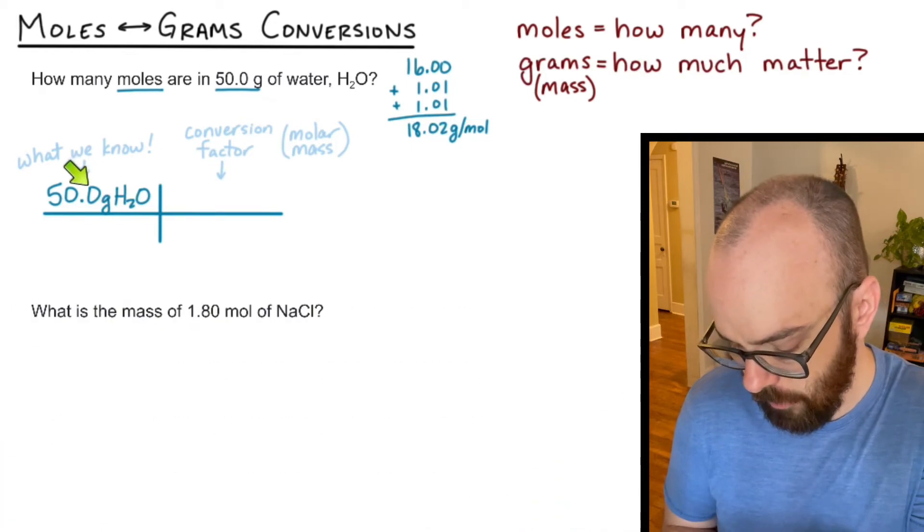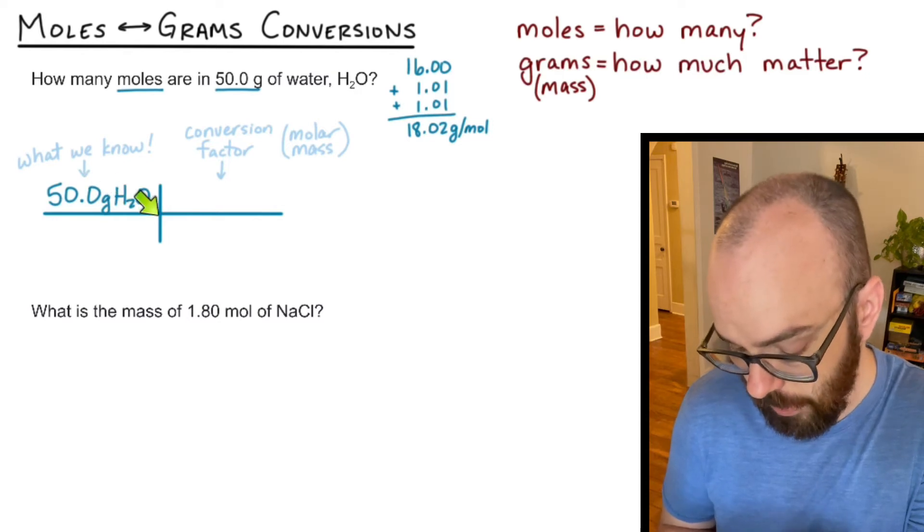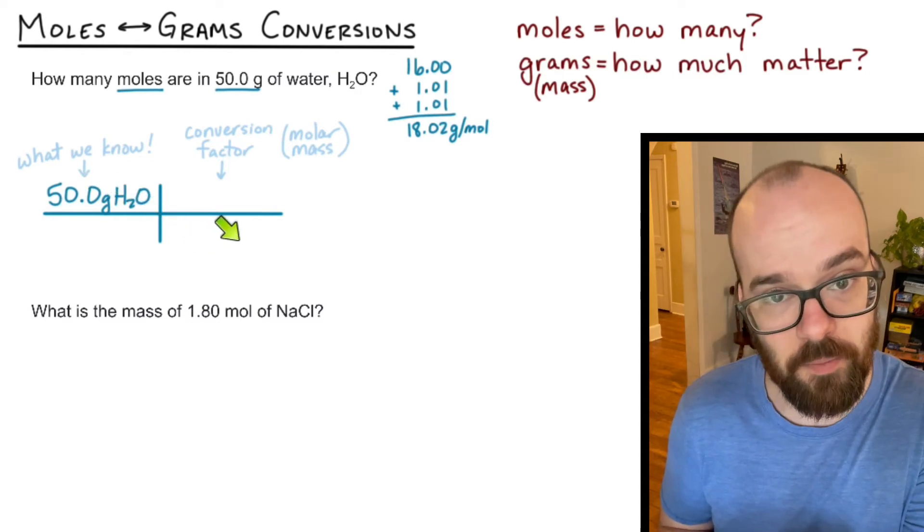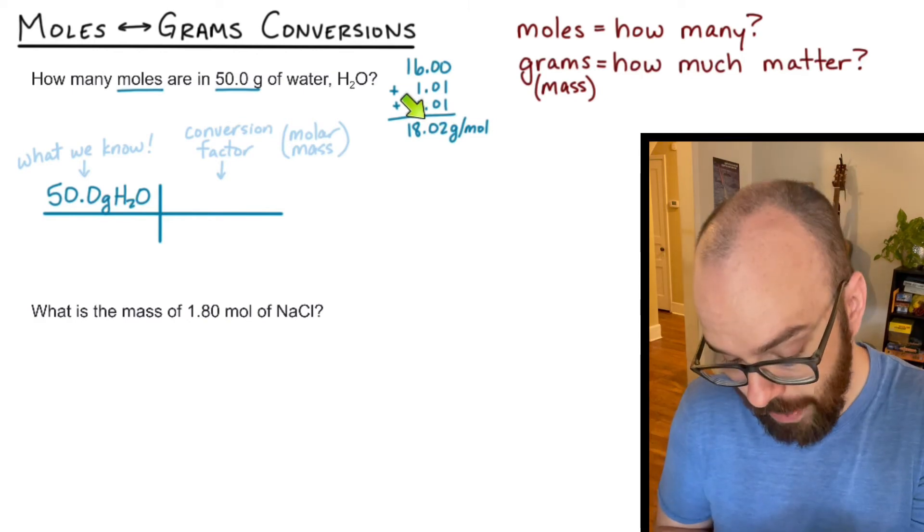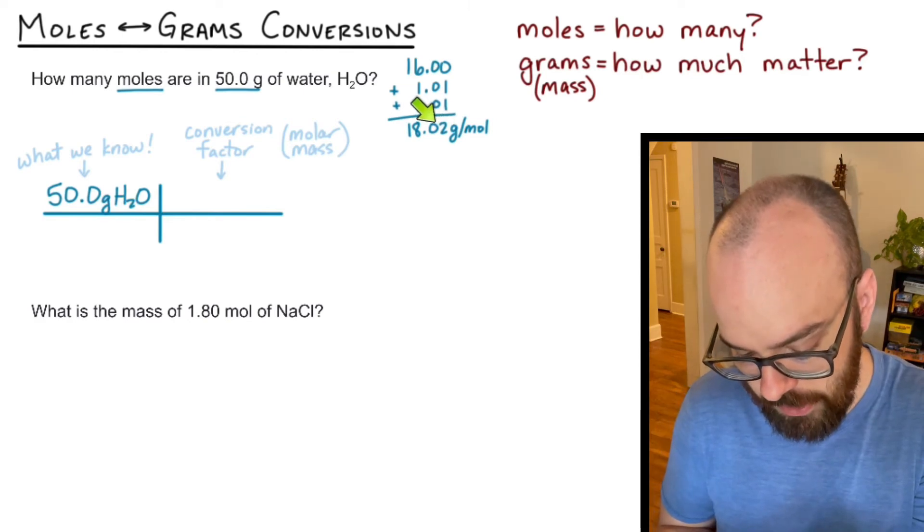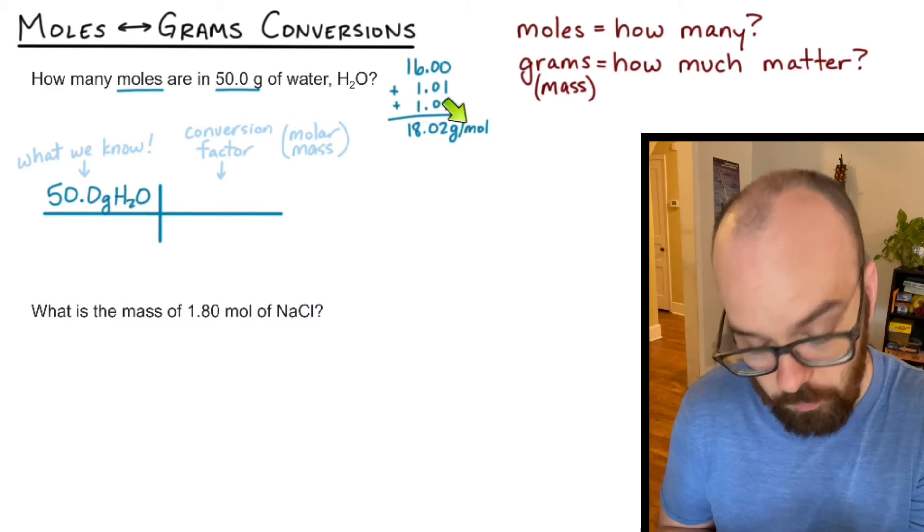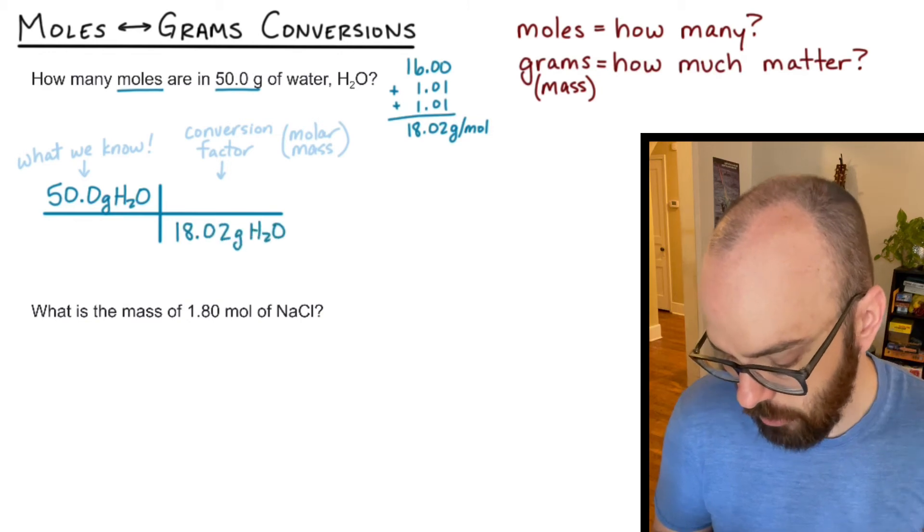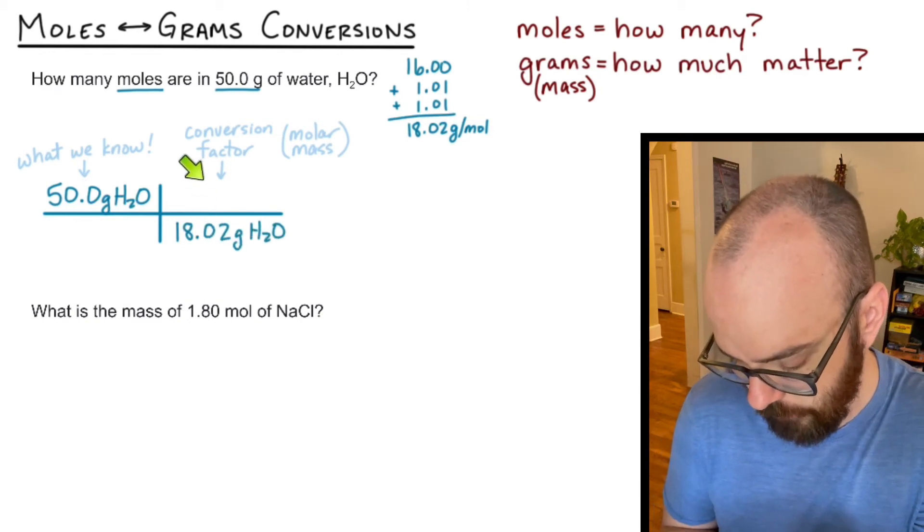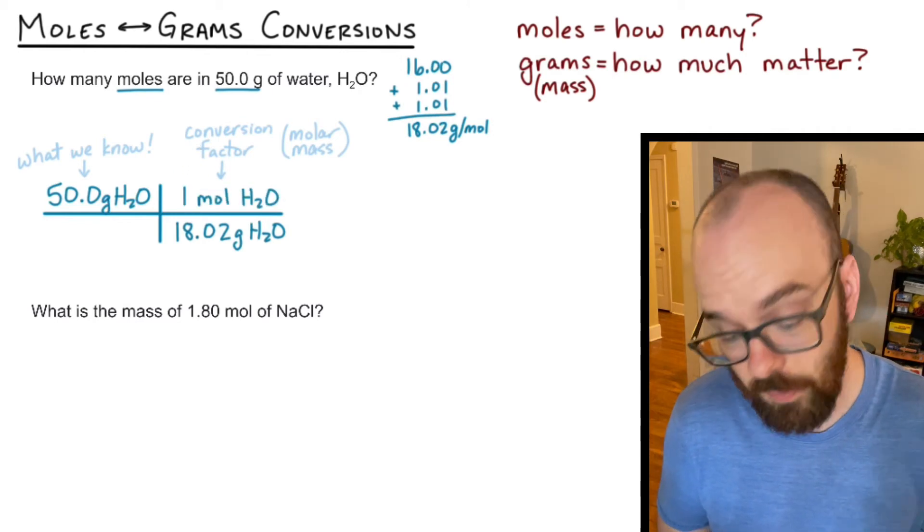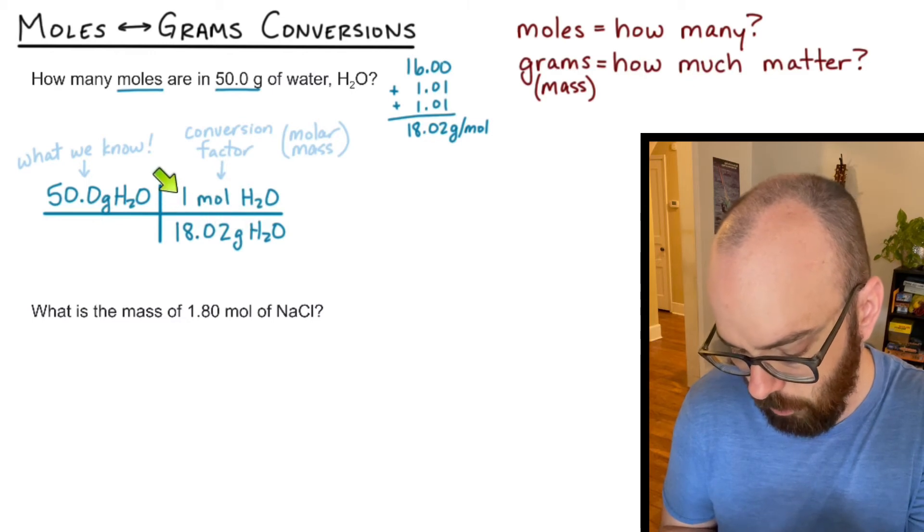Now over here on my first part of this, I have 50.0 grams of water on the top. So I'm going to need grams of water on the bottom so that grams divided by grams will cancel out or divide into one. And for my molar mass, the grams always stays with the number that I have. So it's really 18.02 grams per one mole. So I'm going to start with 18.02 grams on the bottom or the denominator of this fraction in my conversion factor. And then I'm going to put one mole on the top because this is 18.02 grams of water for every one mole of water.